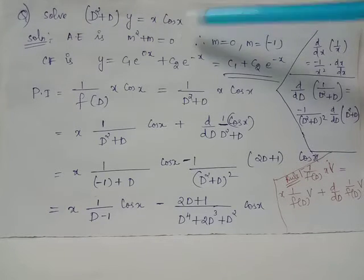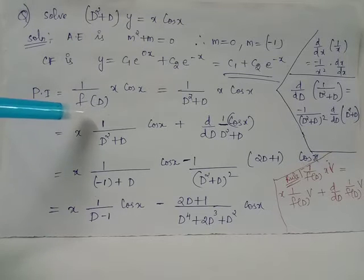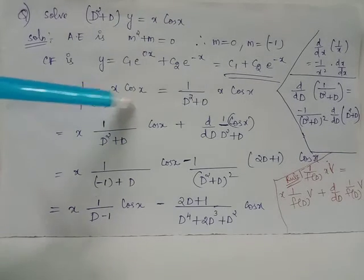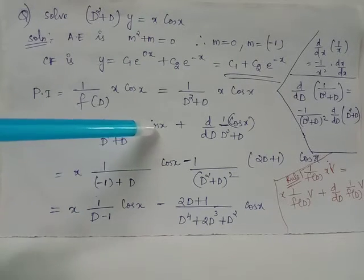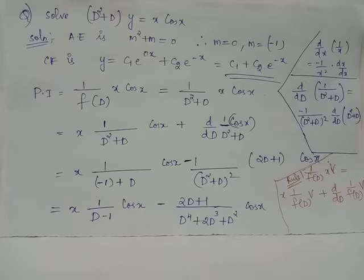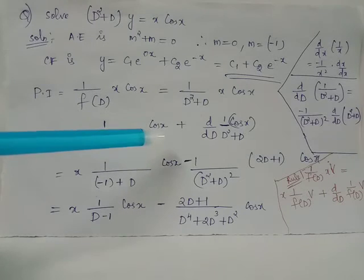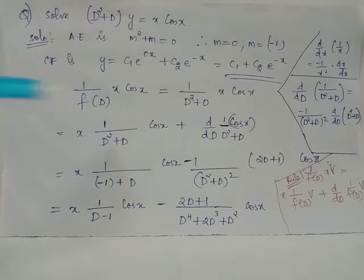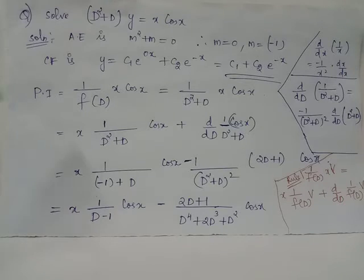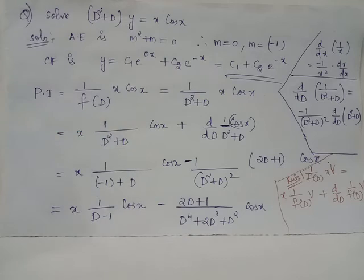Here v = cos(x). Therefore PI = 1/f(D) acting on x·cos(x) becomes x·(1/f(D))·cos(x) plus d/dD of (1/f(D)) acting on cos(x). Since the input is of the form cos(ax) where a is the coefficient of x inside the trigonometric function, wherever D² appears in f(D) it is replaced by -a². Here a = 1, so D² is replaced by -1.